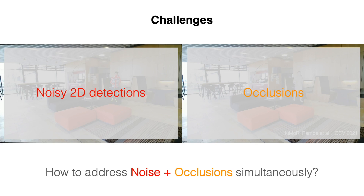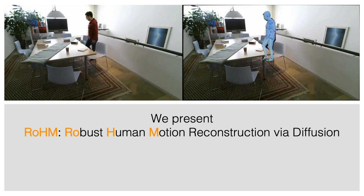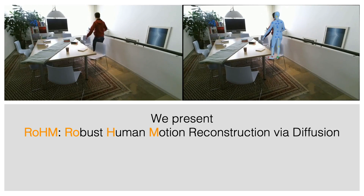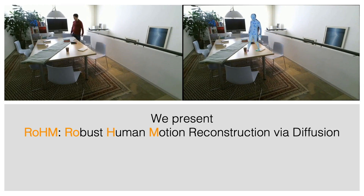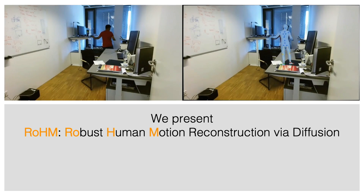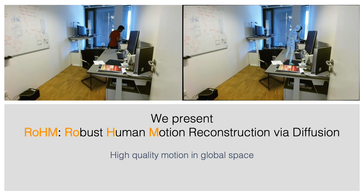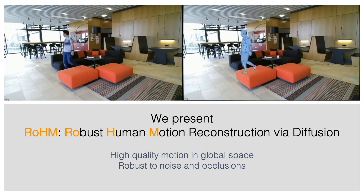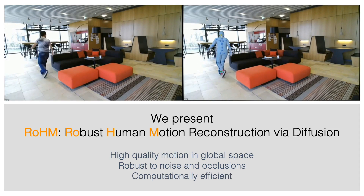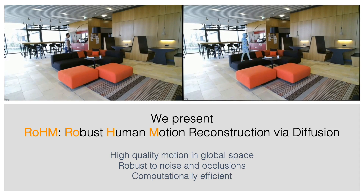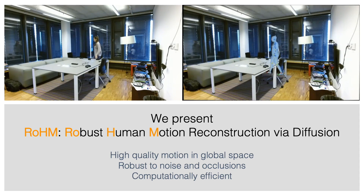How can we address noise and occlusion simultaneously? To this end, we present ROME. By leveraging the iterative nature of diffusion models, ROME reconstructs high-quality motions in the global space, which is robust to both noise and occlusions, and more computationally efficient than optimization-based methods.